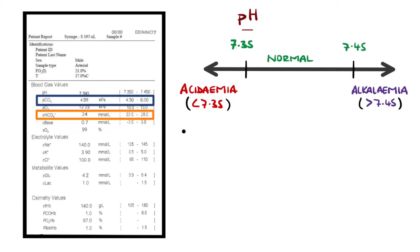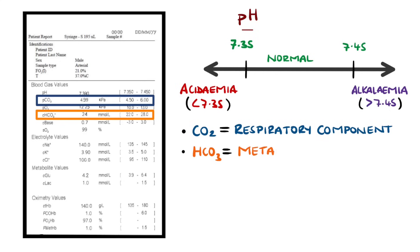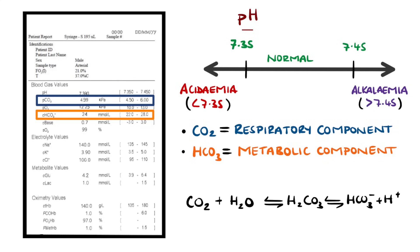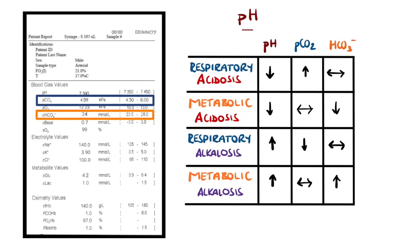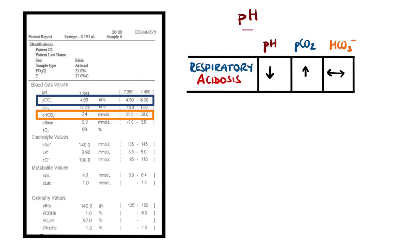On the ABG, there will be the partial pressure of CO2, which reflects the respiratory component, and the concentration of bicarbonate, which reflects the metabolic component, with normal values approximately being 22 to 28 millimoles per litre. An important point to remember is that carbon dioxide forms carbonic acid in the blood, and so more carbon dioxide means more acid. Bicarbonate is an ion in the blood that mops up hydrogen ions, so more bicarbonate means less hydrogen ions and so less acidity. Based on the pH, the partial pressure of CO2, and the bicarbonate level, we can determine whether a primary respiratory or metabolic cause is suspected.